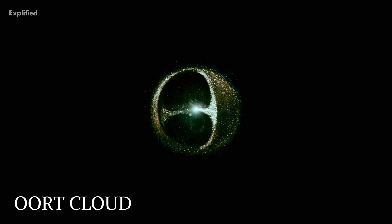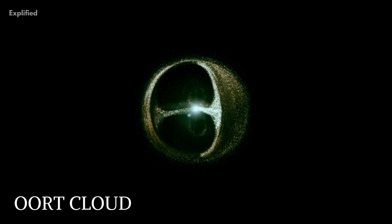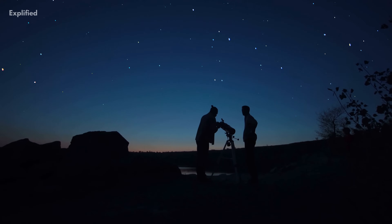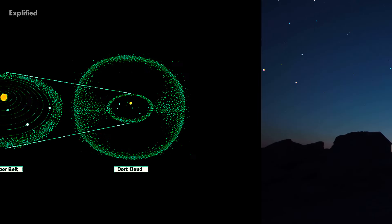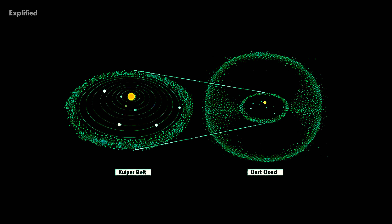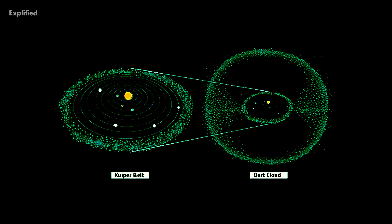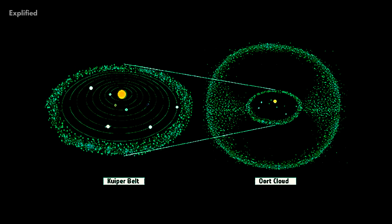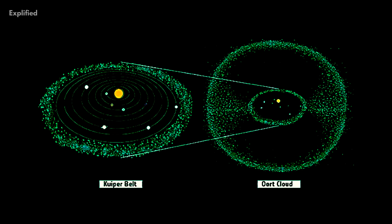The Kuiper Belt and the Oort Cloud are two objects in outer space that are often confused for one another. They have quite a lot of similarities, but today we will be highlighting some of their key differences.